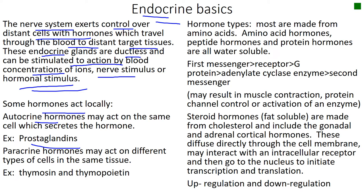Auto means self. Para means alongside. So paracrine hormones act locally but they may affect other types of cells in the same tissue. For instance, in the thymus gland the hormones thymosin and thymopoietin might affect the maturation of immune cells.